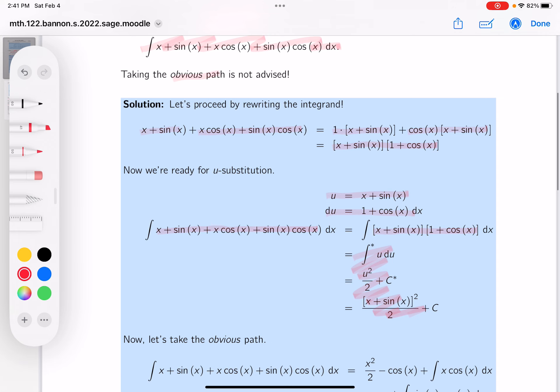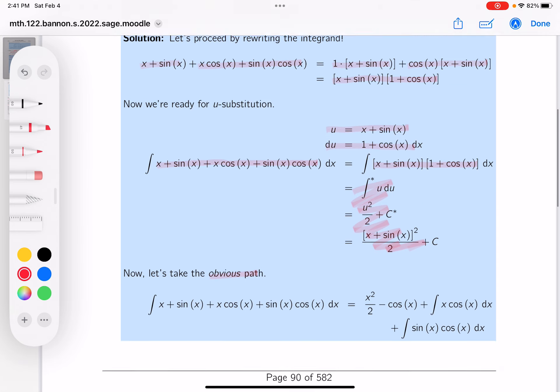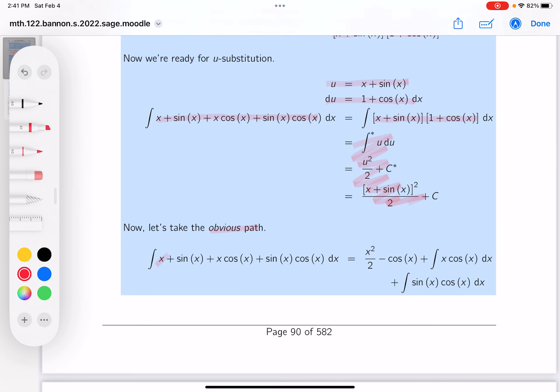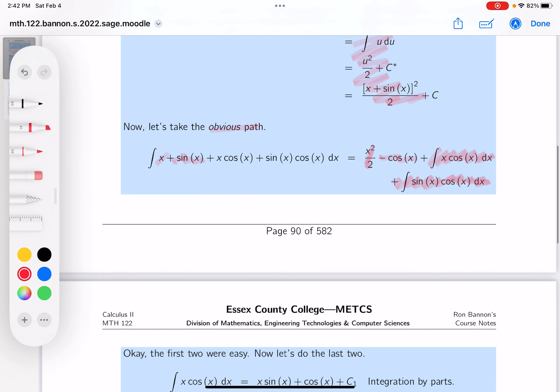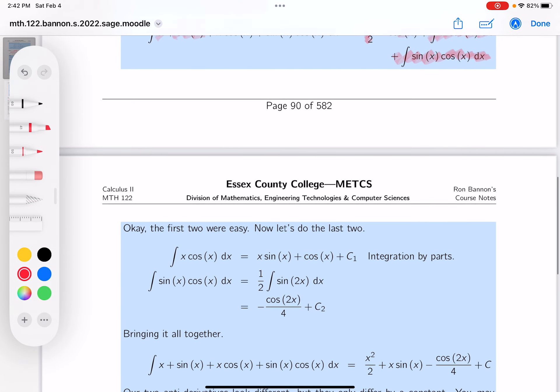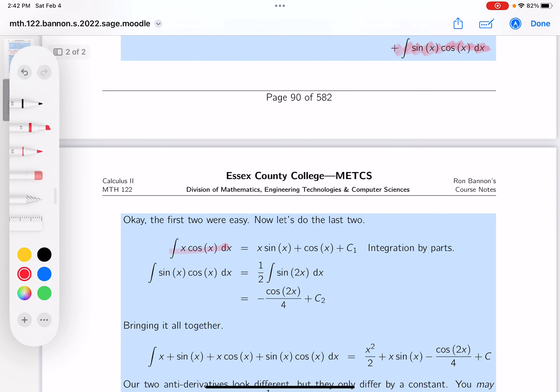Now let's take the obvious path. The obvious path is, you know, term-wise integrations. The derivative of x is x squared over 2. The derivative of sine x is minus cosine x. Fairly simple. And these last two, you know, I'm not going to say they're difficult. They're not. But they require a little more thinking than just writing in the first two terms. For the first two integrations. Let's take a look at it and let's do one at a time. And I'll go through that with you.